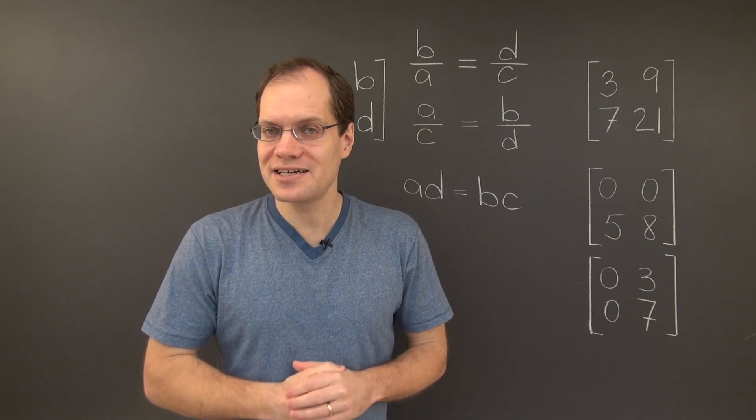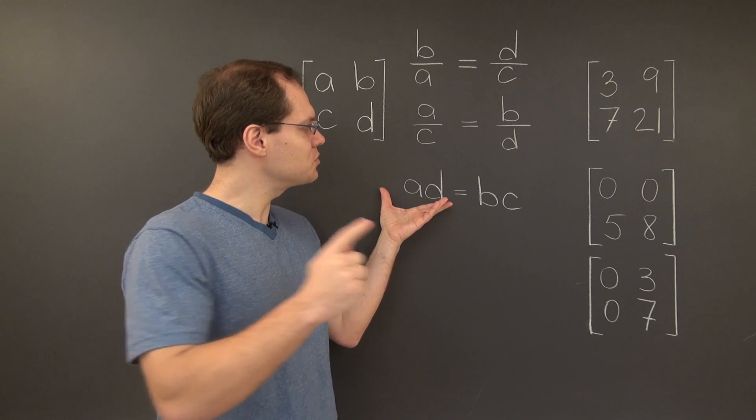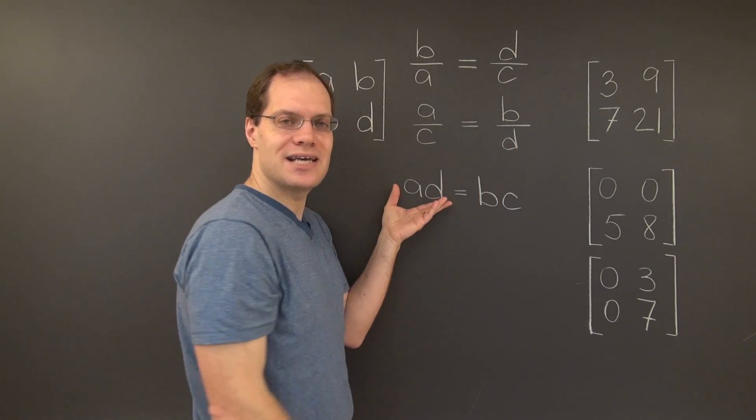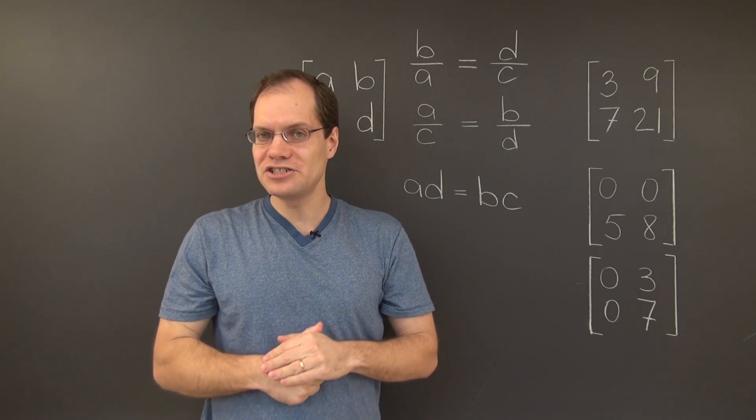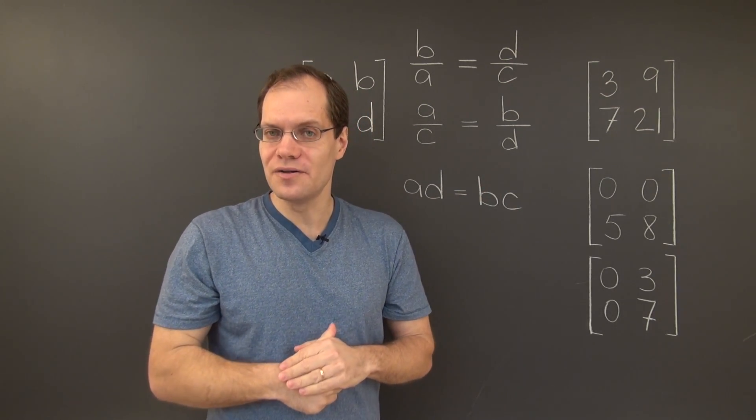If we apply the same way of thinking to the second criterion, we'll actually come up with the same equality. Because we'll have A times D equals, once again, B times C. So, both of these criteria involving ratios are equivalent to this criterion, which doesn't have any ratios at all.